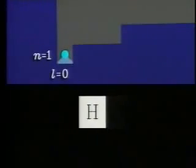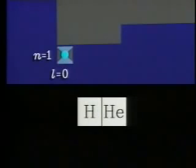For example, two electrons are permitted in the n equals one, l equals zero orbital. The first one completes a hydrogen atom. And the second, with opposite spin, completes the atom of helium. This completes an energy level, making helium chemically inert.